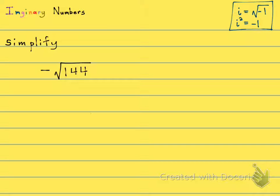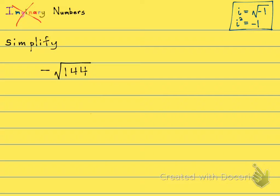Remember, to be an imaginary number, you have to have the negative under the radical. But look at this negative — it's out there, outside the radical. There's no negative under the radical, so this one is not an imaginary number.